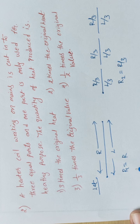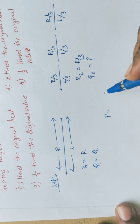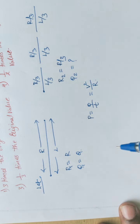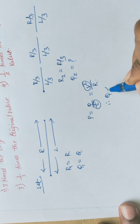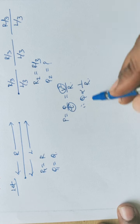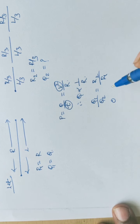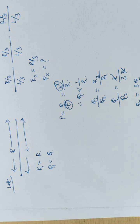In the first case, R1 equals R. In the second case, only one piece is used, so R2 equals R by 3. We want to find the ratio of heat produced. Using P equals Q by t equals V squared by R, with V and t constant, Q is inversely proportional to R. So Q1 divided by Q2 equals R2 divided by R1.